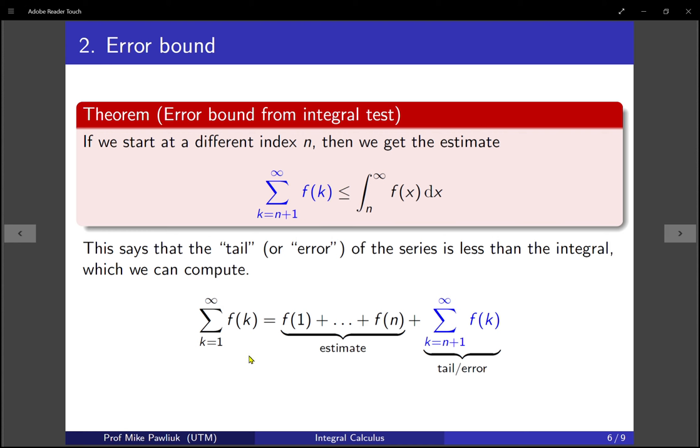Now what do I mean by a tail or error? Well here's the full sum, the sum from k equals 1 to infinity, and we're going to think about it as if we take an initial sum, like if we add up the first 100 terms or 200 terms, how much of what remains is actually relevant? How big is it? So we're going to typically think of this as our estimate, and what's remaining will be the tail of the series, or the error, and we hopefully will have that that error isn't very large.